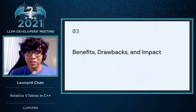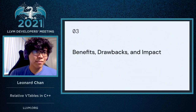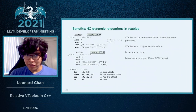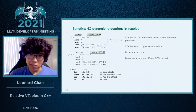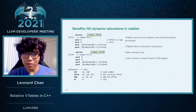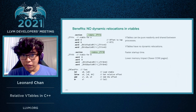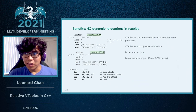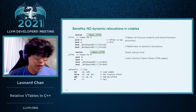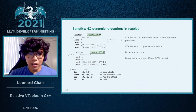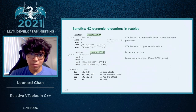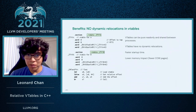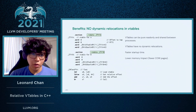So, benefits. One of the main benefits is that there are no dynamic relocations in VTables. This means that VTables can be pure read-only and shared between processes. Having no dynamic relocations means there's also a faster startup time because the dynamic linker has fewer relocations it needs to patch at runtime. This also has a lower memory impact because now that these VTables are read-only, they don't contribute to copy-on-write pages, so there could be fewer of them.